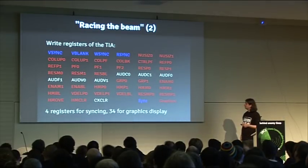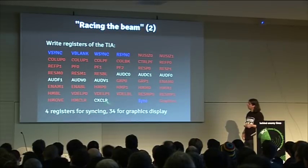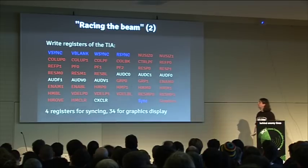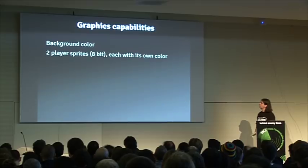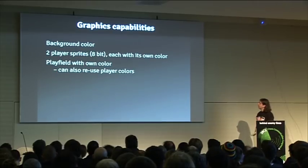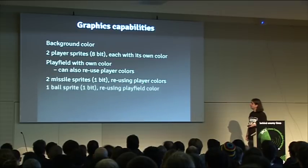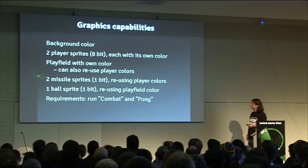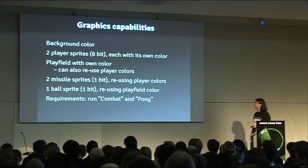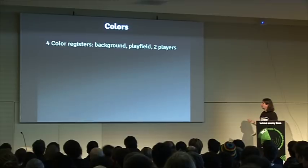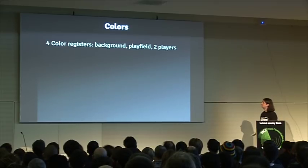Let's look at the write registers. There are four for syncing — you even do your own syncing in hardware — plus a lot of graphics registers, some audio, and a collision reset register. The graphic capabilities include: a background color, two different colors for the sprites, a playfield with its own color, two missile sprites that reuse the player colors, and one ball sprite. The ball, two missiles, and the requirement to run Combat and Pong really explain why the hardware was designed the way it was. You've got four color registers: background, playfield, and the two players — all other objects (missiles, ball) take their color from these registers. Colors can be picked from a palette of 128.